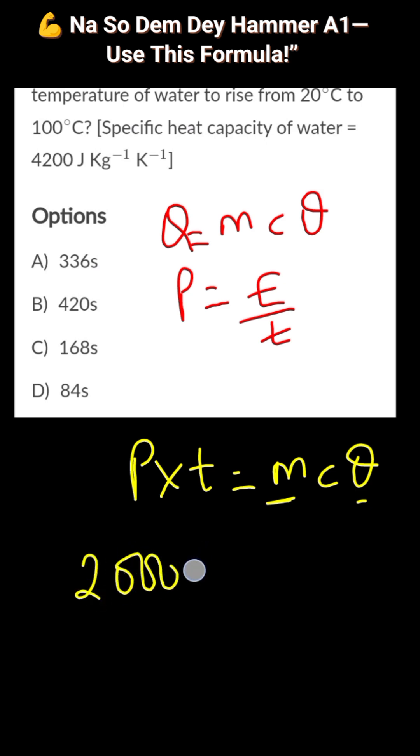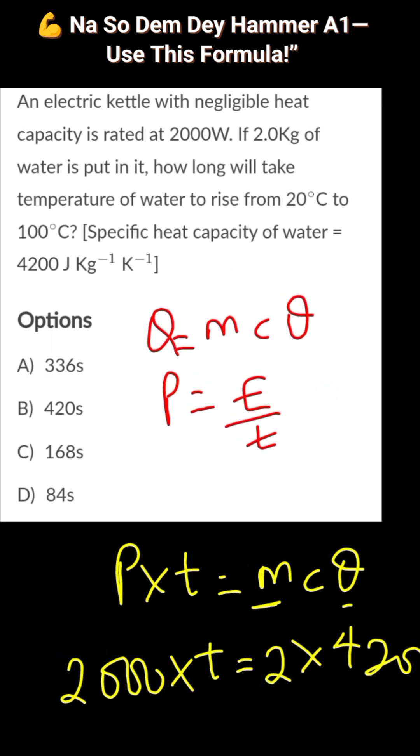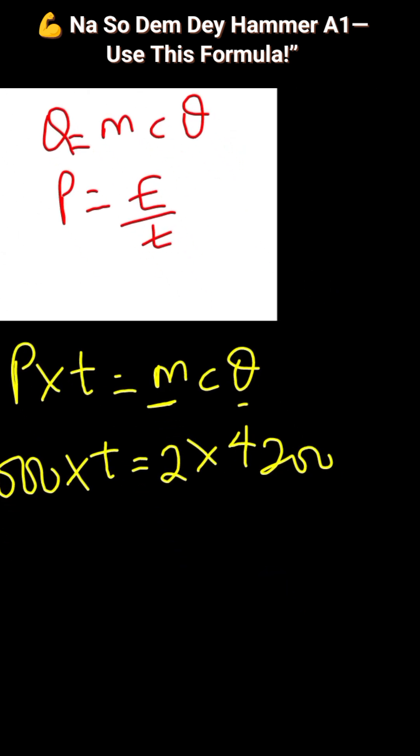Plugging everything into this formula, you will get 2000 times t equals the mass, which is 2, times specific capacity 4200, then the temperature change. You just subtract 100 minus 20, that will give you 80. So that's the temperature change, times 80.